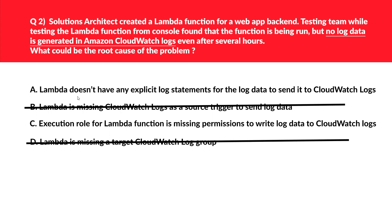Let's move to option A. A says Lambda does not have any explicit log statements for the log data to send to CloudWatch Logs. We know that whenever a Lambda function is executed, Lambda logs will always have data — for example, memory usage and execution time will always be present. Therefore option A is also incorrect. Quick tip: whenever you need to debug an error, options containing permission-related issues should be the potential answer, which we have in option C. So C is the correct answer.